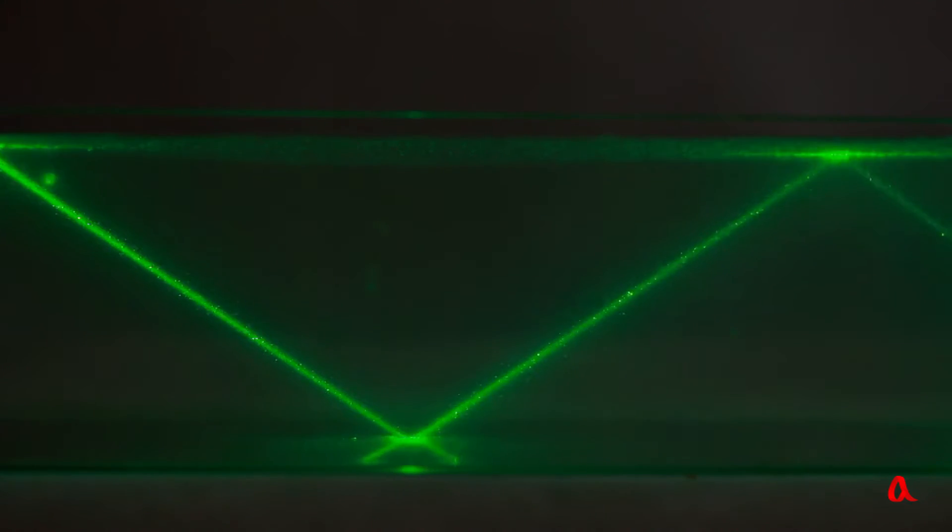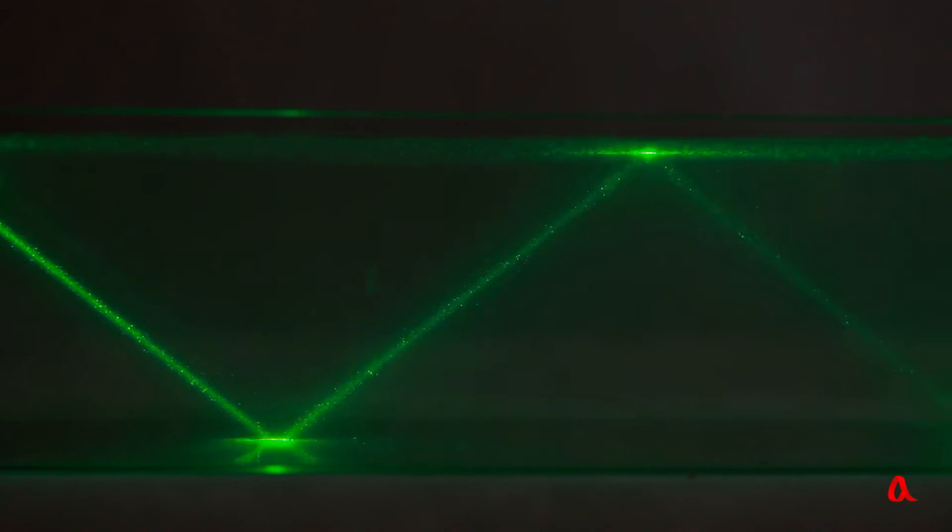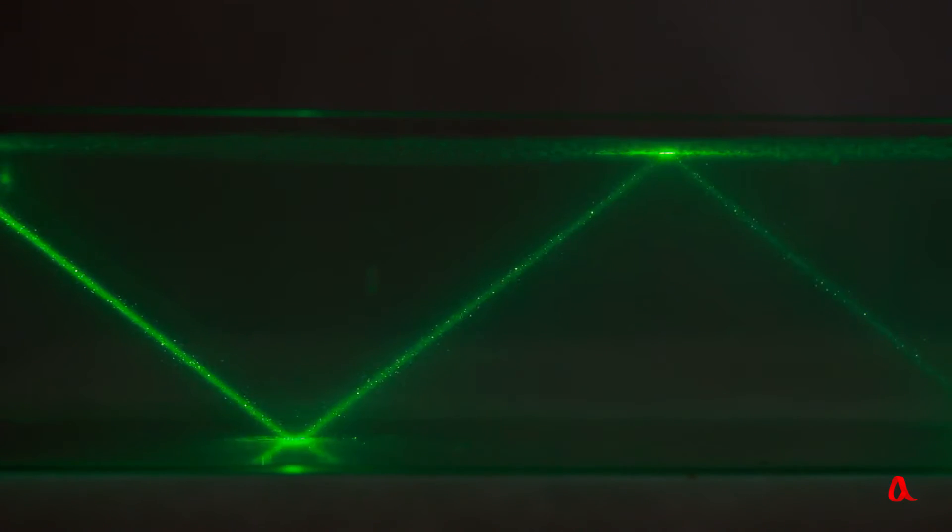We can make the beam reflect consecutively from upper and then lower water level several times. The beam does not emerge from the water into the air. The screen installed above the water remains dark.